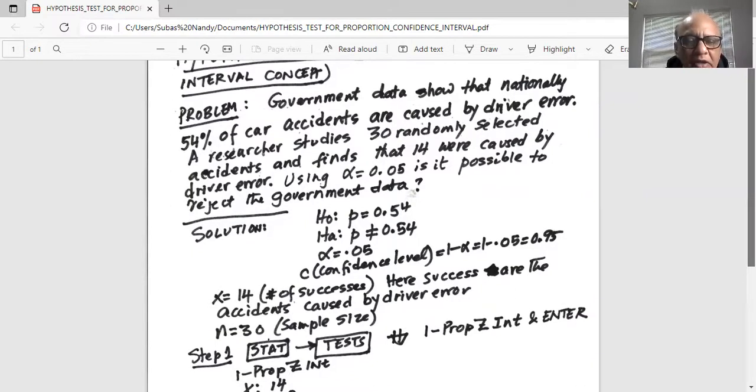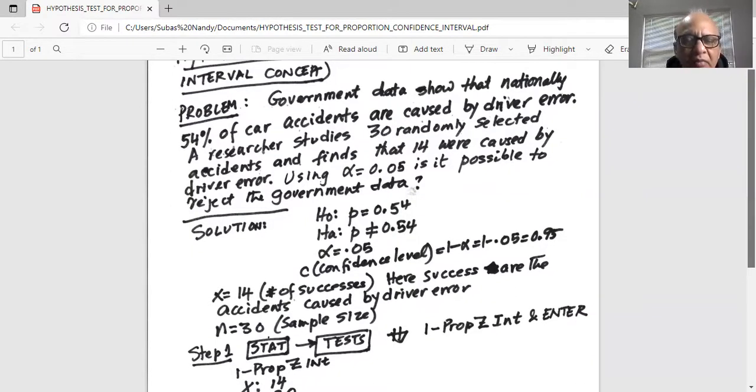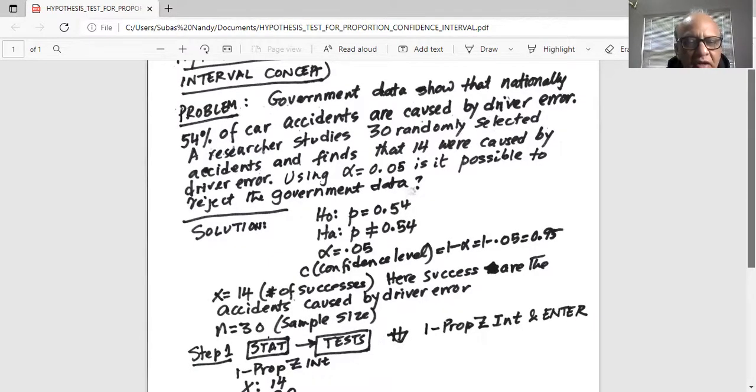Now from the sample data, n is equal to 30 sample size and x is the number of successes is 14, the small number. Here successes are accidents caused by driver error.